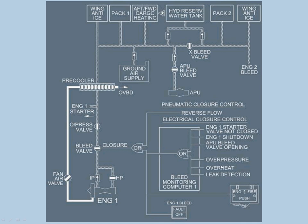The bleed valve also closes for overpressure, overheat, or if any leak is detected — the BMC will shut down the bleed valve. Additionally, pressing the fire push button on the overhead panel will also shut down the bleed valve. On the air conditioning panel, the engine one bleed push button, if pushed off, will close the bleed valve. There is also an overpressure valve to keep pressure in range, and the engine one starter. The three sources are visible: the engine, a ground supply for when on the ground, and an APU bleed supply.